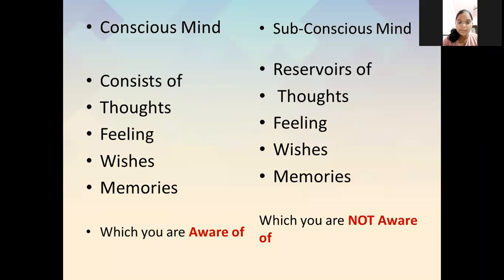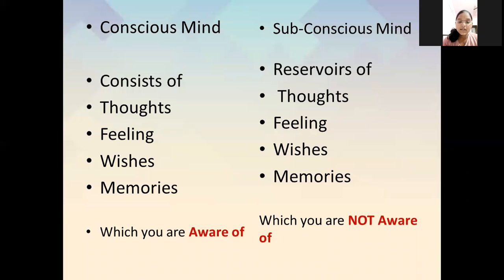Now the difference between conscious mind and subconscious mind. The conscious mind consists of thoughts, feelings, wishes, and memories which you are aware of — things you are currently aware of, done in your present, and which last for a short term.